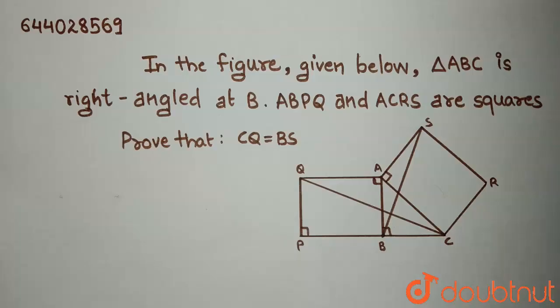Hello everyone. Today we have been given the question: In the given figure below, triangle ABC is right-angled at B, ABPQ and ACRS are squares. We need to prove that CQ equals BS.